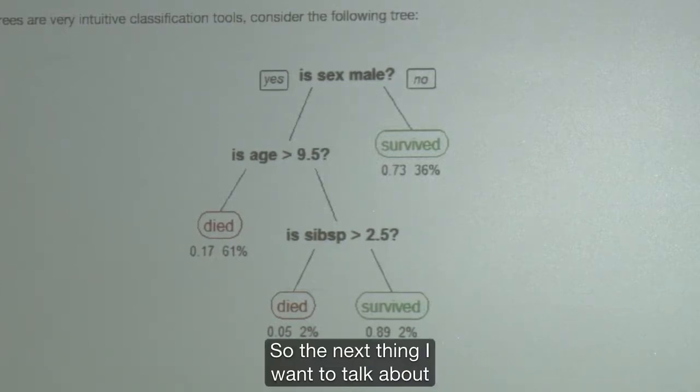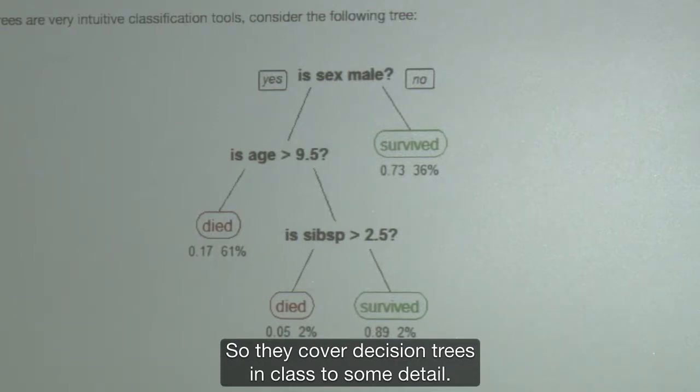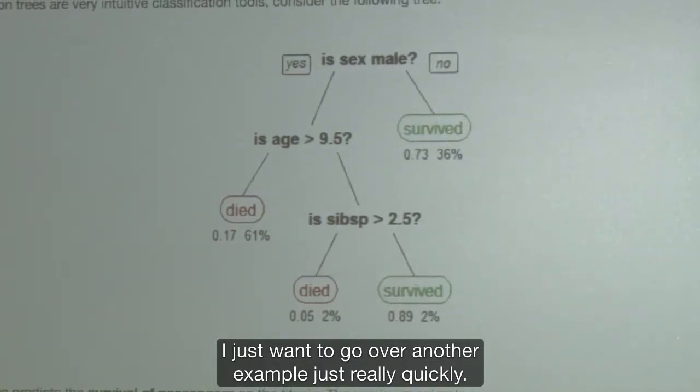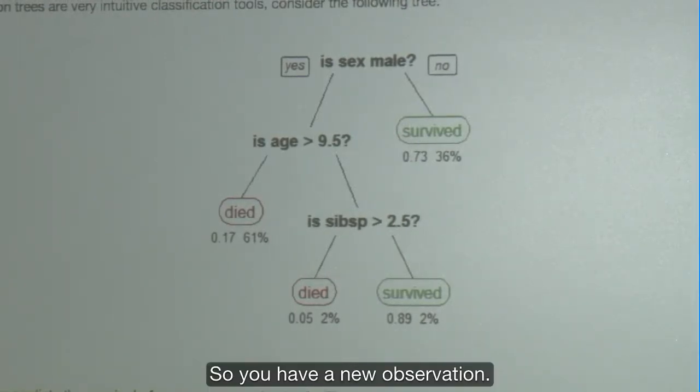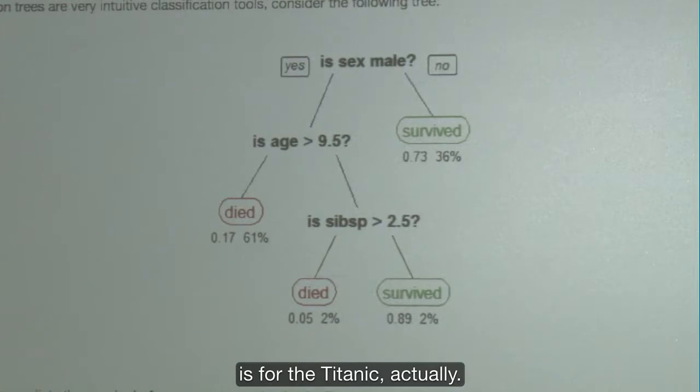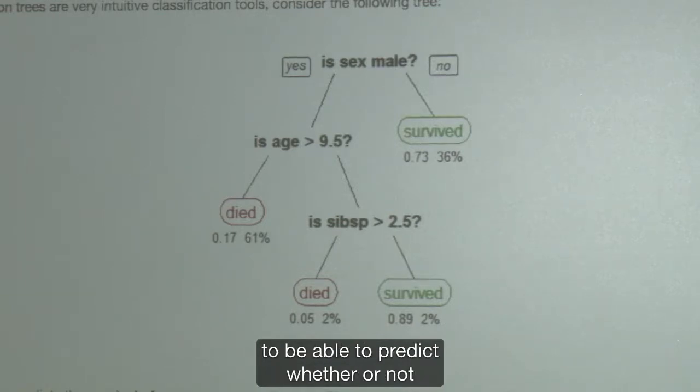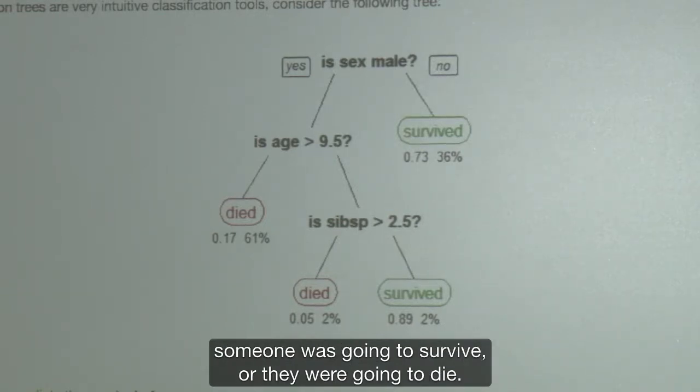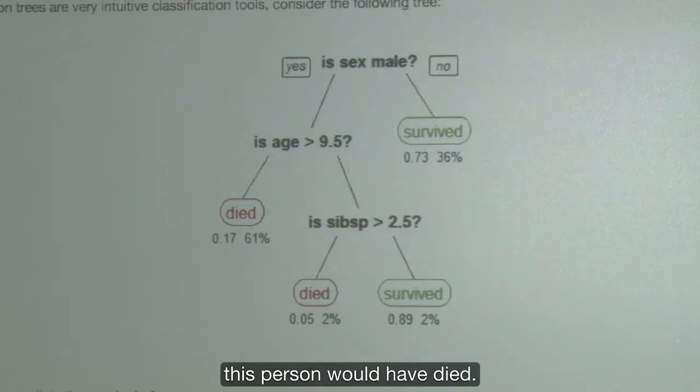So the next thing I want to talk about is actually decision trees. They cover decision trees in class to some detail. I just want to go over another example. If someone gave you a tree, how do you use it? So you have a new observation. Someone gave you this tree. This is for the Titanic, actually. They built a classification tree to be able to predict whether or not someone was going to survive or they were going to die.